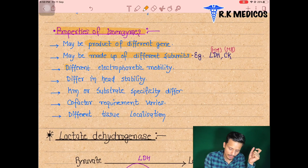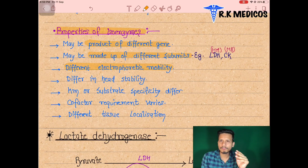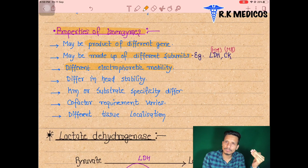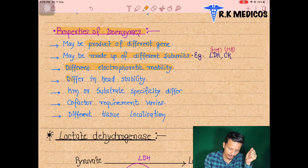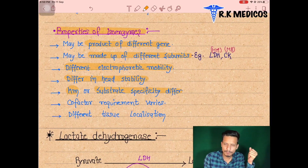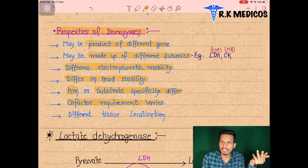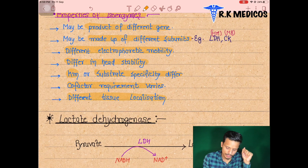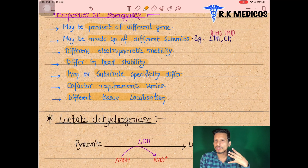Isoenzymes also have different electrophoretic mobility — when electrophoresis is performed, the same enzyme with different subunits shows different mobility. They also differ in heat stability, Michaelis constant (Km), substrate specificity, cofactor requirements, and tissue localization.